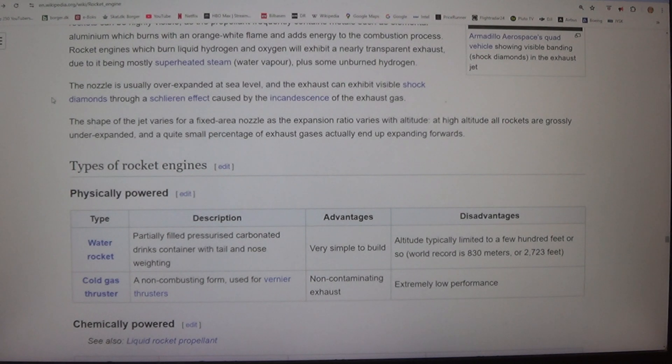The shape of the jet varies for a fixed area nozzle as the expansion ratio varies with altitude. At high altitude, all rockets are grossly under-expanded, and a quite small percentage of exhaust gases actually end up expanding forwards.